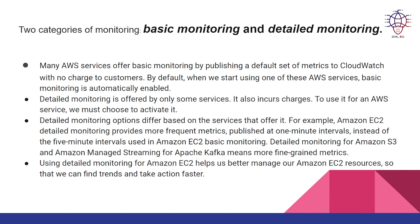There are two categories of monitoring: basic monitoring and detailed monitoring. Many AWS services offer basic monitoring by publishing a default set of metrics to CloudWatch with no charge to customers. By default, when we start using one of these AWS services, basic monitoring is automatically enabled. Detailed monitoring is offered by only some services and also incurs charges. To use it for an AWS service, we must choose to activate it.